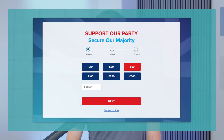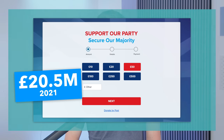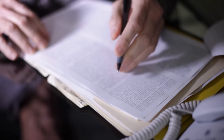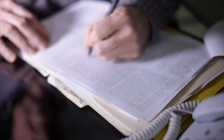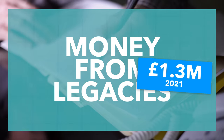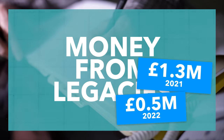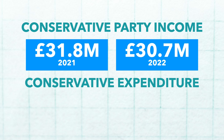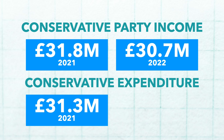More worryingly for the Tories, though, is that their revenue from donations declined significantly. In 2021, they received about £20.5 million from donations, whereas last year this had declined to £18.1 million — a massive £2.4 million decline. This problem is compounded by the fact that the Tories received less money last year from legacies, which basically means wills. In 2021, they received about £1.3 million from this; last year, this had more than halved to only £514,000. All in all, their total income had declined by roughly £1 million from 2021 to 2022, going from about £31.8 million to £30.7 million. Their expenditure, though, had increased from £31.3 million to £32.7 million, meaning the Conservatives ended the year on a loss of £2.3 million.